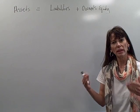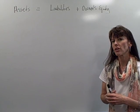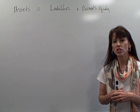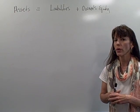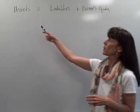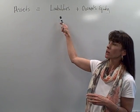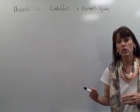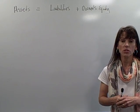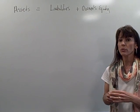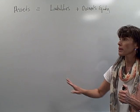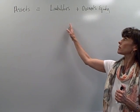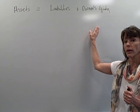We're going to expand a little bit on the accounting equation. The last video introduced you to the accounting equation: assets will always equal liabilities plus owner's equity. That's what we use to record business transactions. We always want to make sure that the total of our assets always equals the liabilities plus the owner's equity.